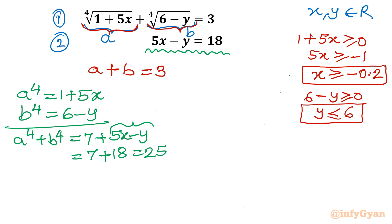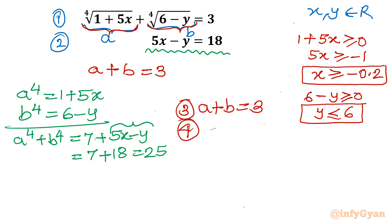So our reduced system of equations is: equation 3 is a + b = 3, and equation 4 is a⁴ + b⁴ = 25. We will now solve this system.